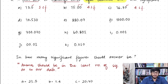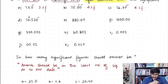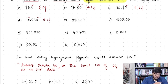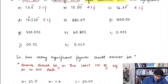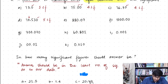For 70.530: the trailing zero at the end is significant. The zero between 7 and 5 is sandwiched between two significant figures, so it's significant as well — giving five significant figures. For 880.07: the two zeros between 8 and 7 are sandwiched between two significant figures, so both are significant — five significant figures in total.